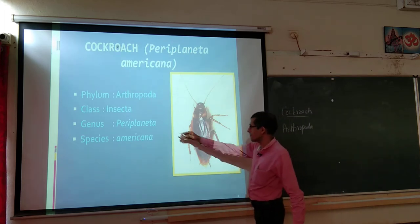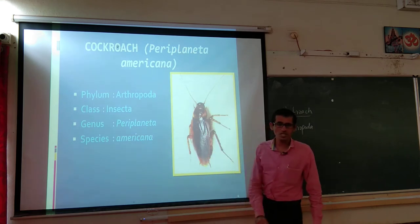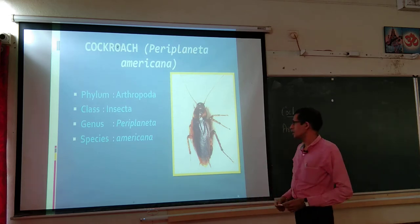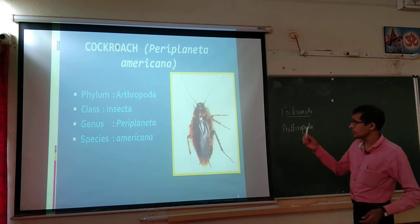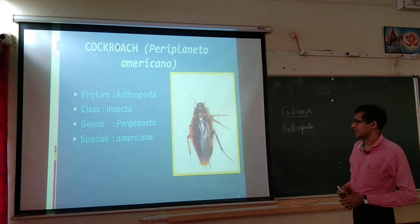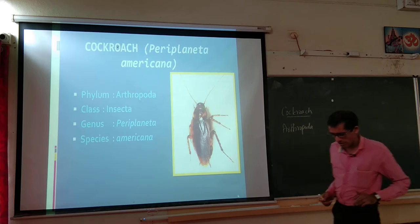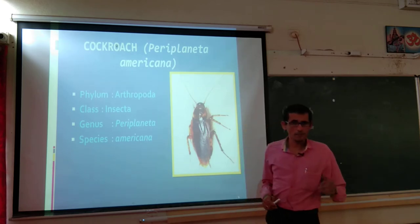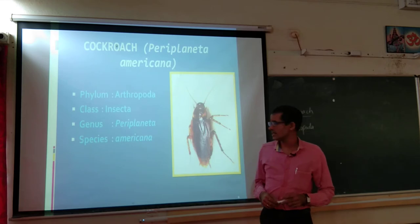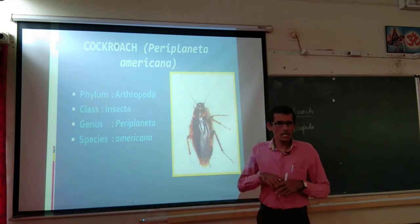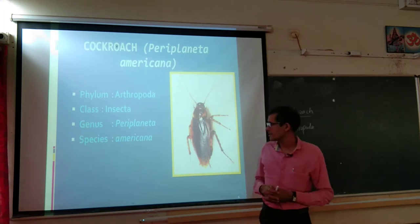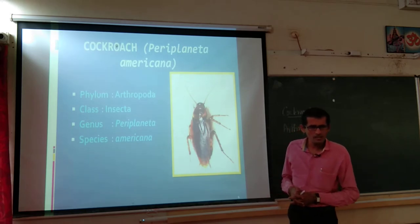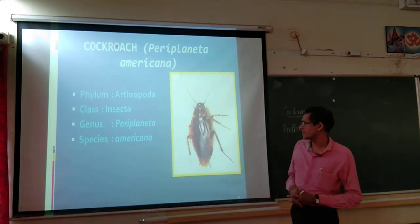The binomial name is Periplaneta americana — genus name followed by species name, according to binomial nomenclature. It belongs to phylum Arthropoda, class Insecta, genus Periplaneta, species americana. The species name 'americana' is because it originated in America.